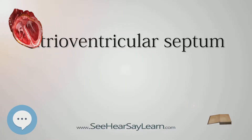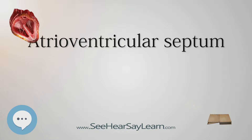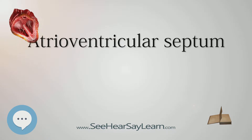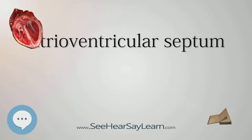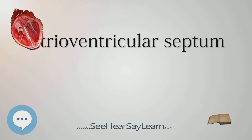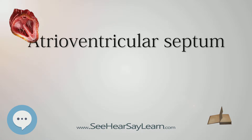The atrioventricular septum is a septum of the heart between the right atrium and the left ventricle. Although the name atrioventricular septum implies any septum between an atrium and a ventricle, in practice the divisions from RA to RV and from LA to LV are mediated by valves, not by septa. Also, there is usually no communication between the LA and the RV.